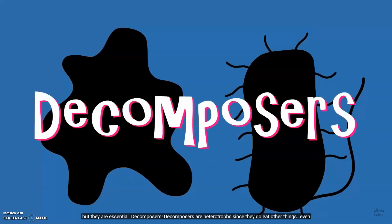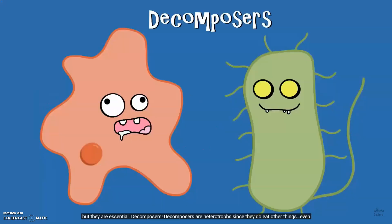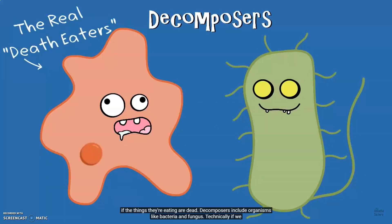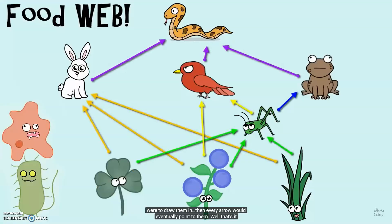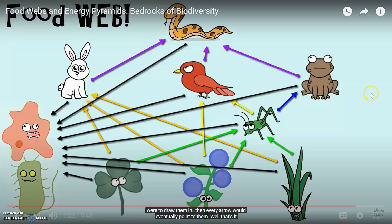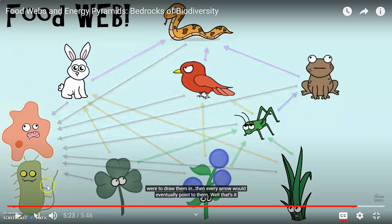There are some organisms we left out of our food webs and food chains, but they're kind of a big deal: decomposers. Decomposers are heterotrophs since they do eat other things, even if the things they're eating are dead. Decomposers include organisms like bacteria and fungus. If we were to draw them in, every arrow in the food web would eventually point to them. They still need to get their glucose from other organisms and don't do photosynthesis, so they are not autotrophs — they're heterotrophs. When any of these organisms perish, the mushrooms, fungus, and bacteria will break them down.